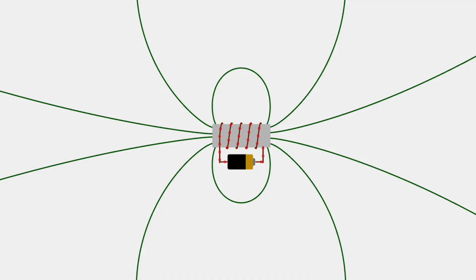People realized that if you run electricity through a wire, it creates a magnetic field around it, just like a bar magnet.